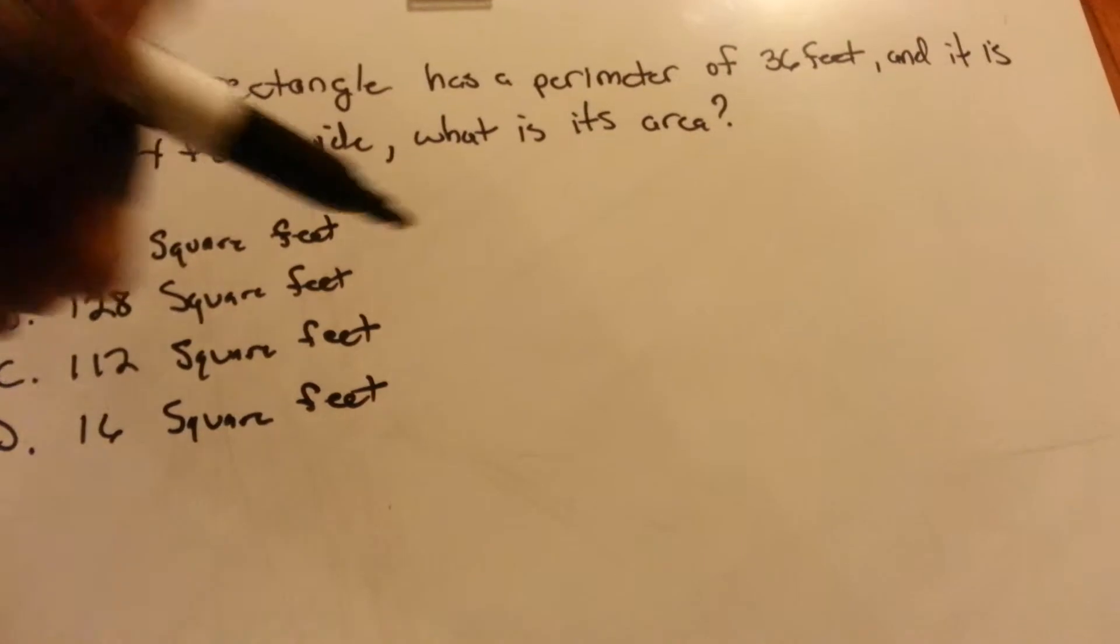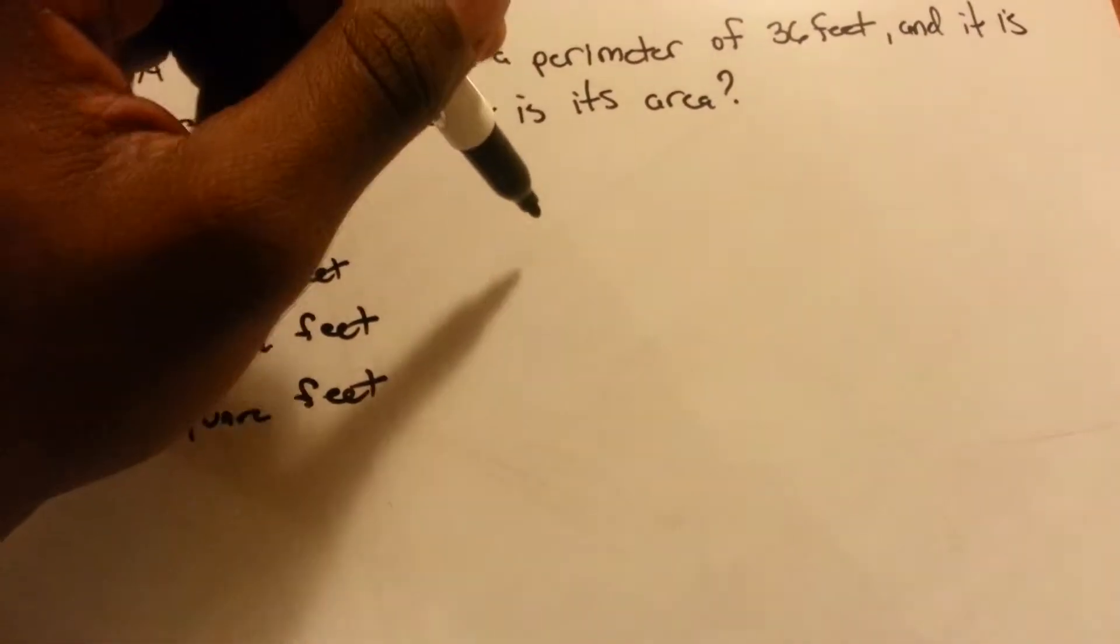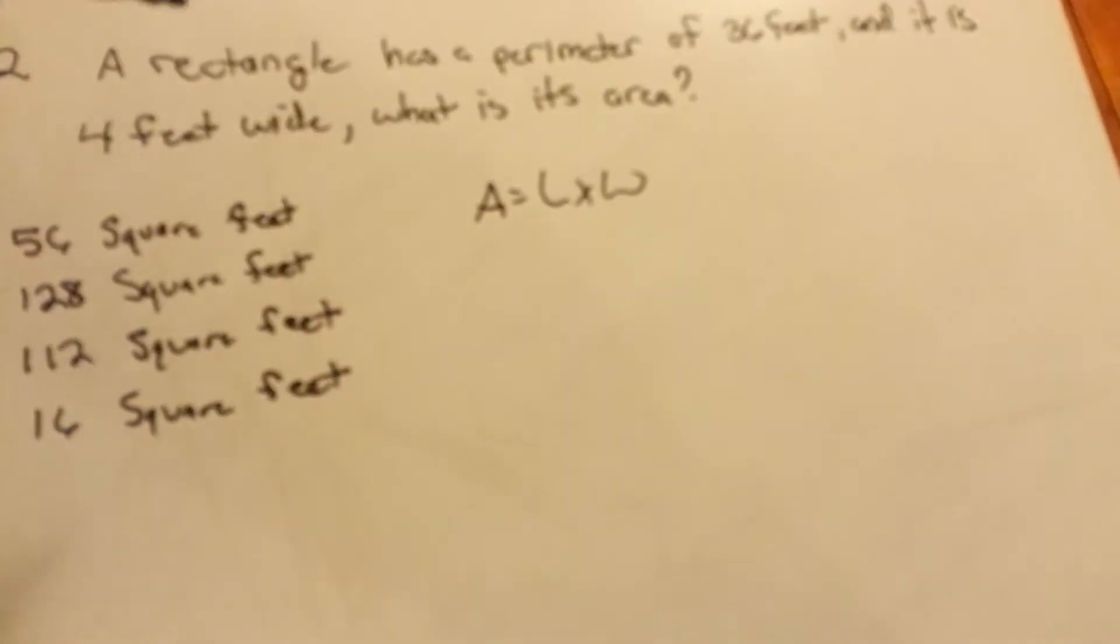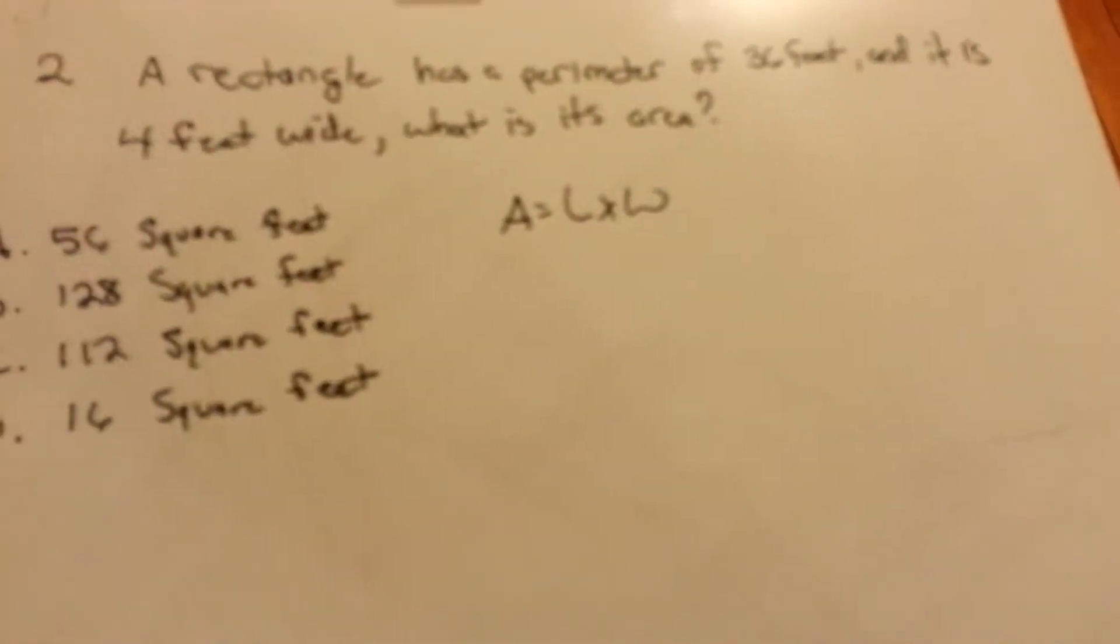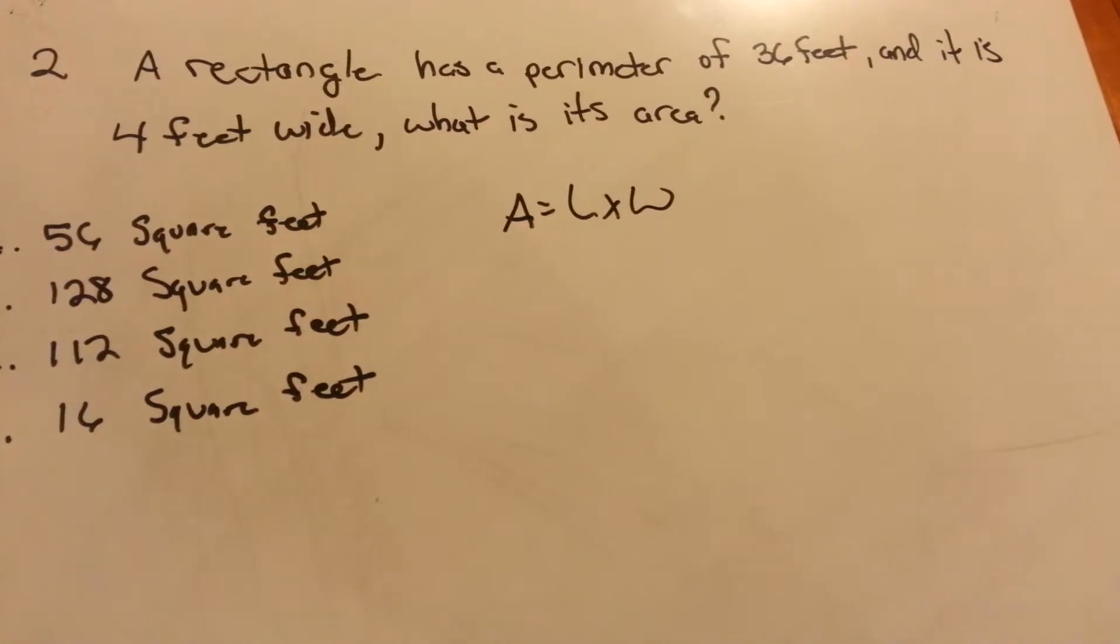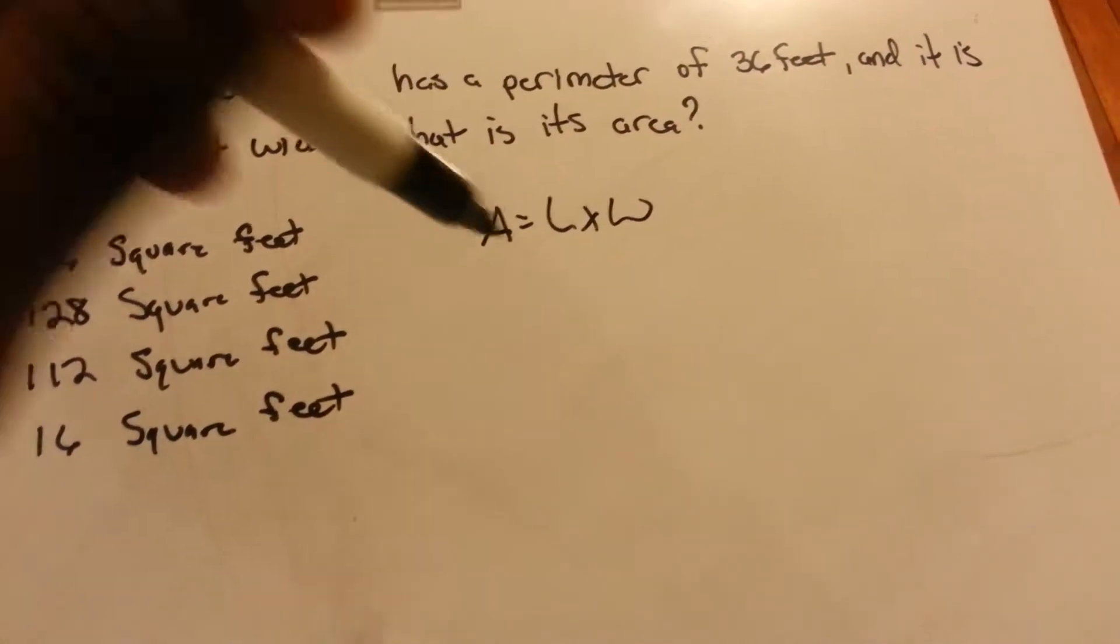So first we need to know that the area of a rectangle equals length times width. So they're already giving us the width, saying it's 4 feet wide.